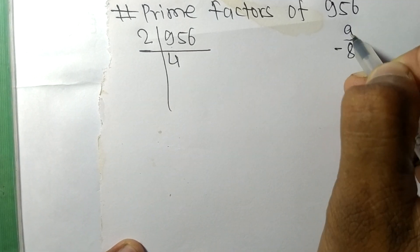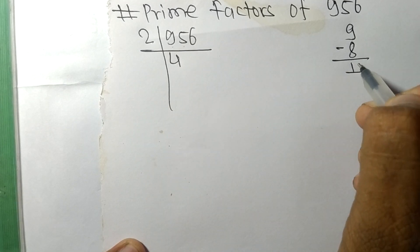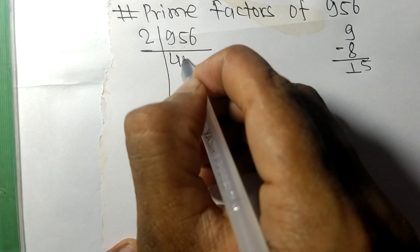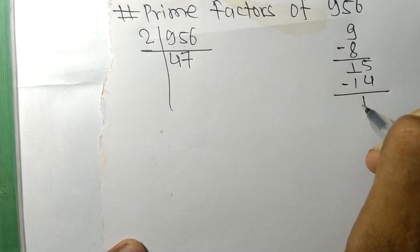This 5, 15, so 2 times 7 means 14. On subtracting we get 1.